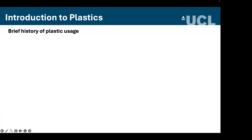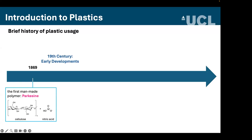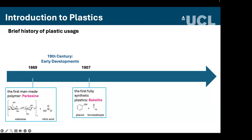A brief history of plastic usage: the first man-made polymer, Parkesine, was introduced in 1869, invented in the UK by Alexander Parks, who prepared it from cellulose by treating it with nitric acid — regarded as the birth of the plastic industry. In 1907, Leo Baekeland invented Bakelite, the first fully synthetic plastic containing no molecules found in nature, made through phenol and formaldehyde. Bakelite was an excellent insulator used widely in telephones, radios, and as jewelry.